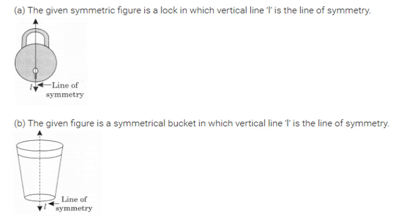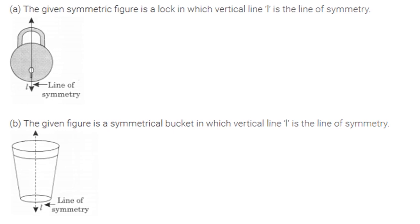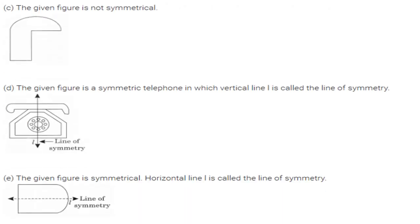The second figure is a bucket or glass shape — it also has one vertical line of symmetry. Figure C has no line of symmetry and is not symmetrical. Figure D is a telephone, and vertical line L is the line of symmetry. Figure E is symmetrical with a horizontal line L as the line of symmetry.